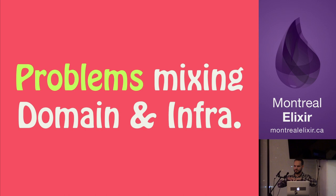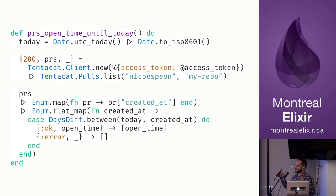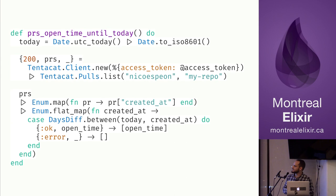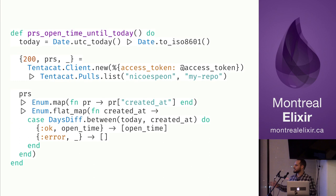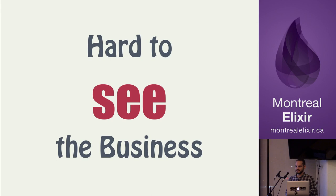Often you get domain and infrastructure mixed together. Here is a small Elixir snippet — I've got a problem with this kind of code. I'm dealing with a date in ISO 8601 format that I need to pass into my program, and I'm using a Tentacat client instantiated with an access token to connect to GitHub and get a list of pull requests. All of this is technical detail, but this function is about business: listing pull requests open from some time until today.